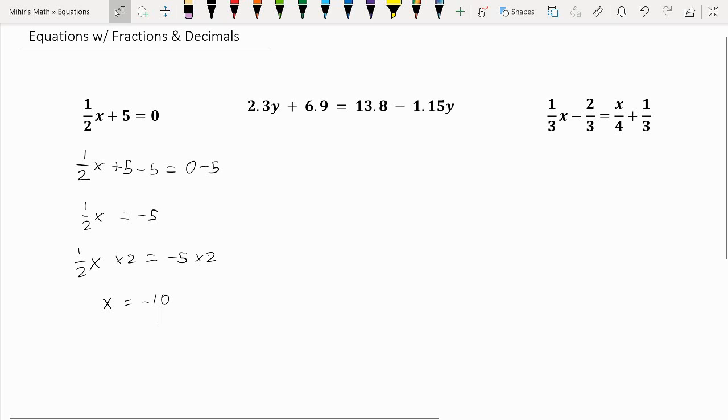The first thing to do would be putting all the variables onto one side. So here we have minus 1.15y. If we want to put our variable on the left side, we would have to add 1.15y to both sides.